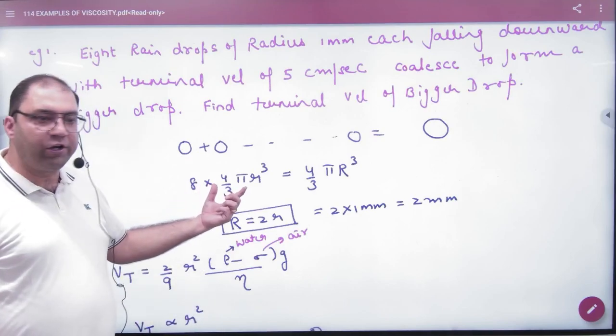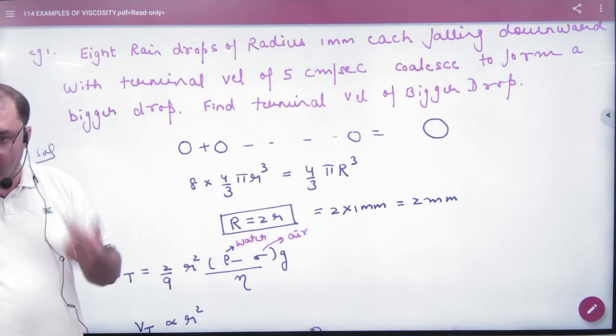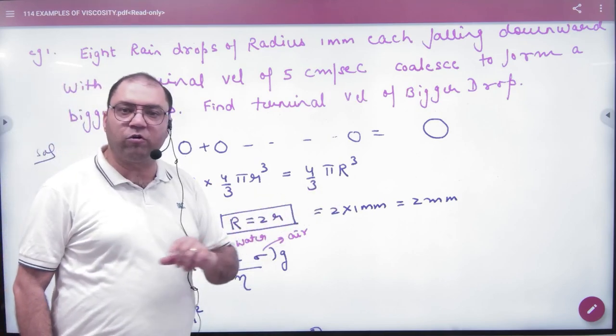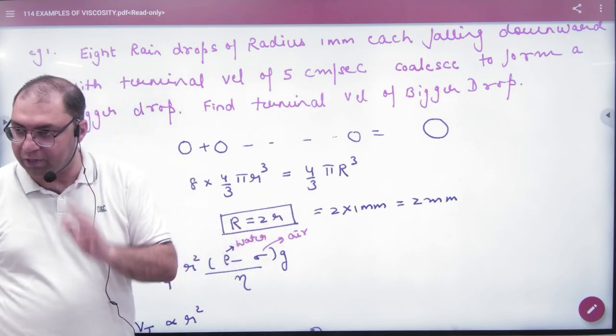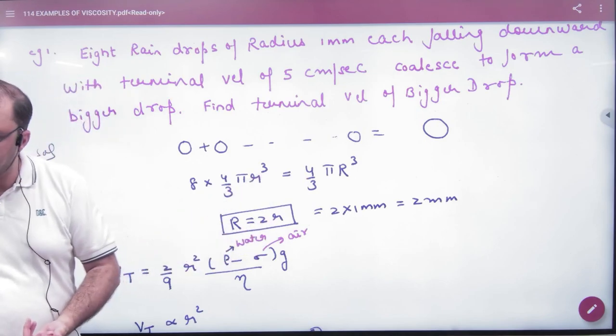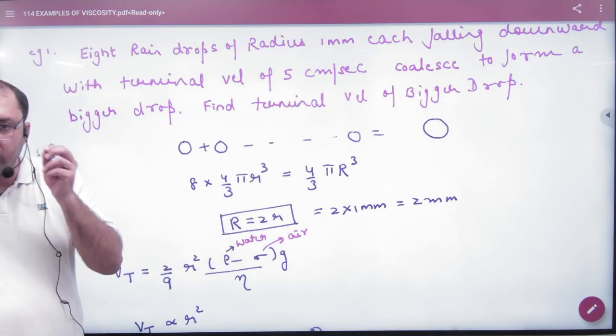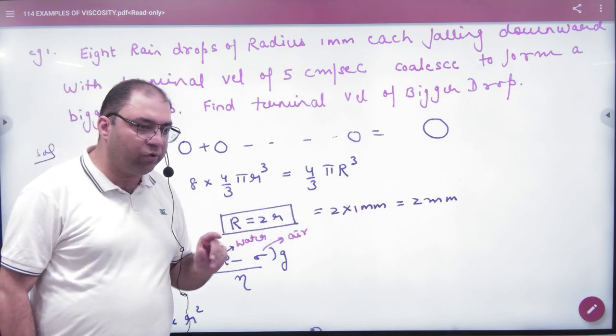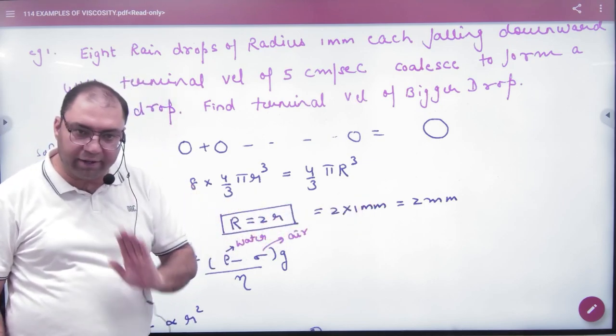One small drop: 8 into 4 by 3 pi r cube equals the big drop 4 by 3 pi R cube. So you cancel from here to get the big and small r relation. The small r value is 1 mm, then the big R value is 2 mm.